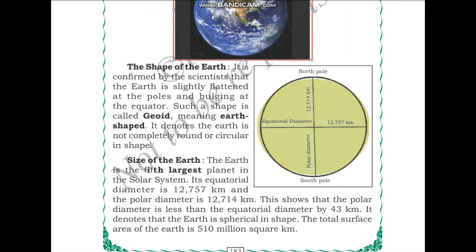Scientists have confirmed that the Earth is slightly flattened at the poles and bulging at the equator. So the Earth is not perfectly like a ball. Such a shape is called a geoid — a name based on the shape of the Earth meaning 'Earth-shaped' — which denotes that the Earth is not completely round or circular in shape.